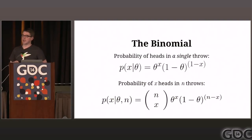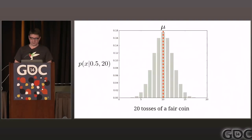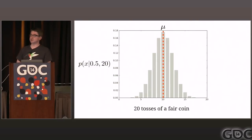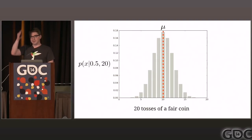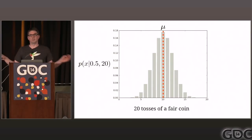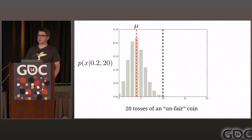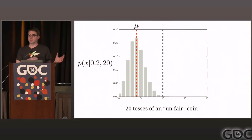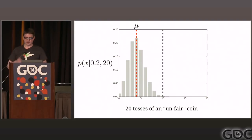Graphing the binomial with 20 tosses, the distribution of expected heads is centered around 10 for a fair coin, but allows for possibilities of 15 or 5 with significantly lower probability. For an unfair coin — where it's more likely to come up tails — the distribution shifts. With theta at 0.2, it shifts to the left-hand side.